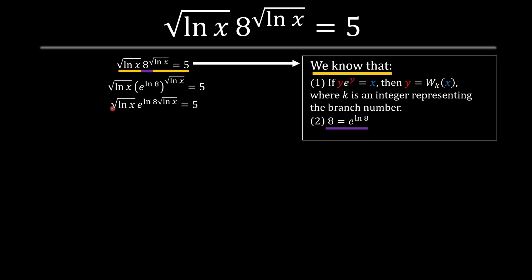And now we can multiply on both sides ln 8 which is equivalent and now we have something on the top and at the bottom that are the same and we have some e. So basically our y in this scenario is ln 8 square root ln x. So now we can apply Lambert's function.